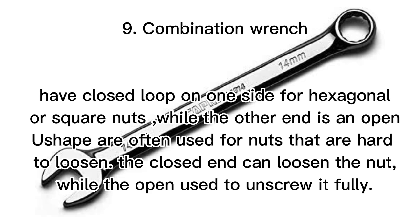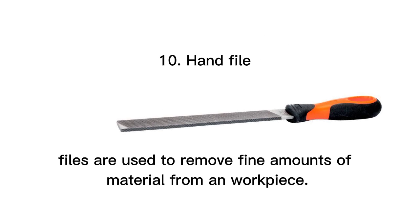9. Combination wrench: Has a closed loop on one side for hexagonal or square nuts, while the other end is open. The closed end is often used for nuts that are hard to loosen, while the open end is used to unscrew it fully. 10. Hand file: Files are used to remove fine amounts of material from a workpiece.